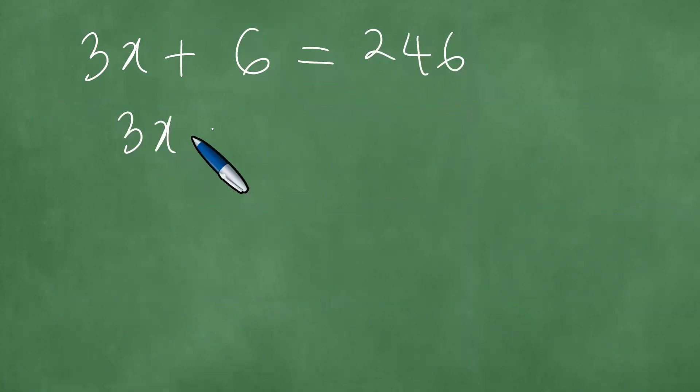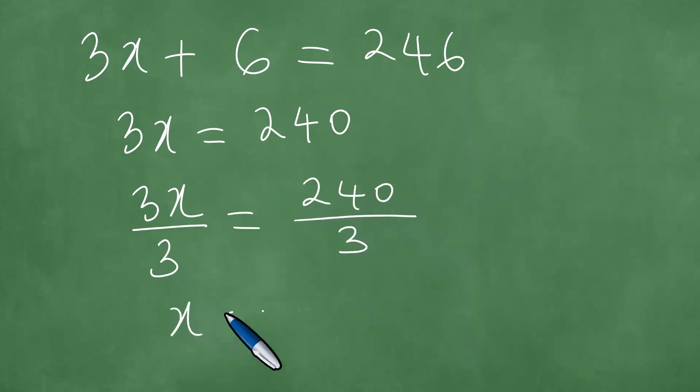Which means 3x is equal to 246 minus 6, which is actually 240. Upon further examination, we divide the left by 3, and we also divide 240 by 3, and we have therefore that x equals 80.